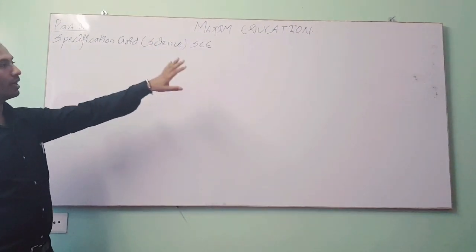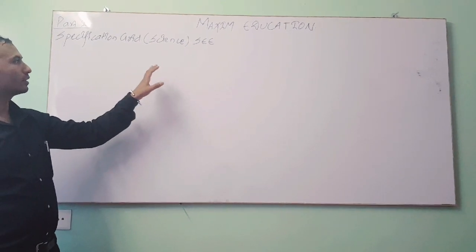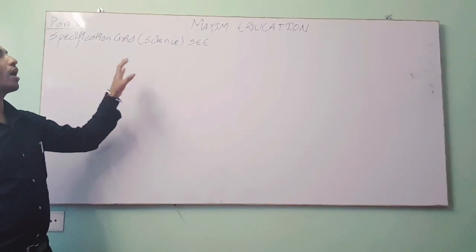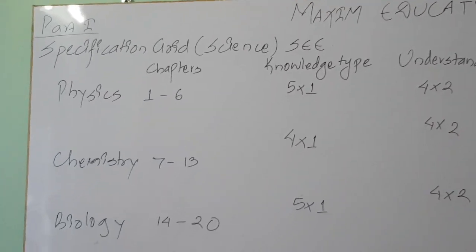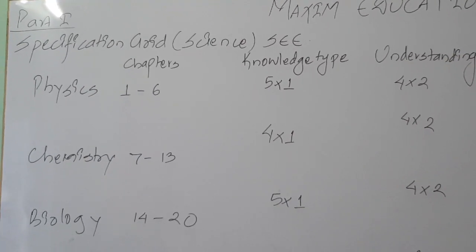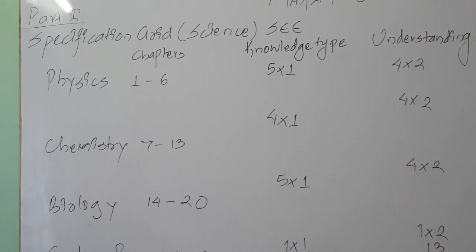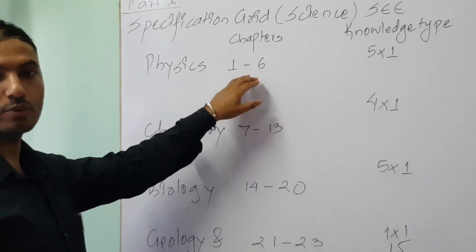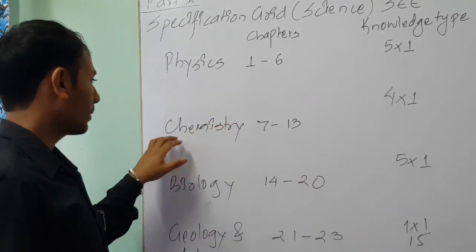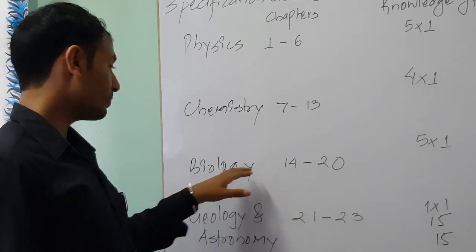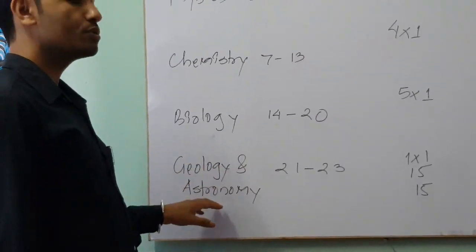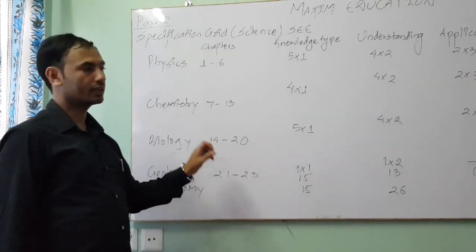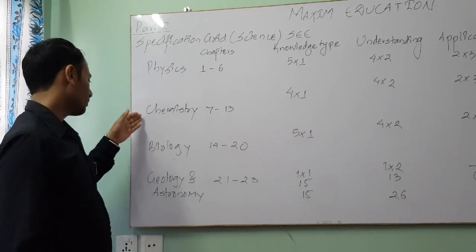On the board I will be writing the specification grid for each part of science — not the chapters, but the parts of science — and how the questions are asked. For SE science, physics covers chapters 1 to 6, chemistry chapters 7 to 13, biology chapters 14 to 20, and geology and astronomy chapters 21 to 23. Altogether there are 23 chapters in science.